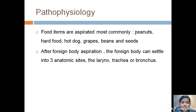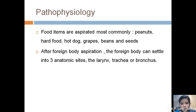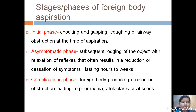The food items most commonly aspirated are peanuts, hard food, hot dogs, grapes, beans, and seeds. After foreign body aspiration, the object can settle into three anatomic sites: larynx, trachea, and bronchus. There are three stages: the initial phase with choking, gasping, coughing, or airway obstruction at the time of aspiration; the asymptomatic phase where lodging of the object leads to relaxation of reflexes and reduction of symptoms lasting hours to weeks; and the complication phase where the foreign body produces erosion or obstruction leading to pneumonia, atelectasis, or abscess.